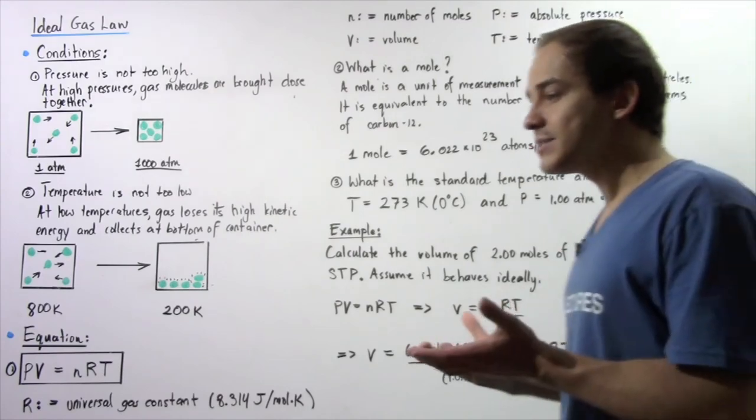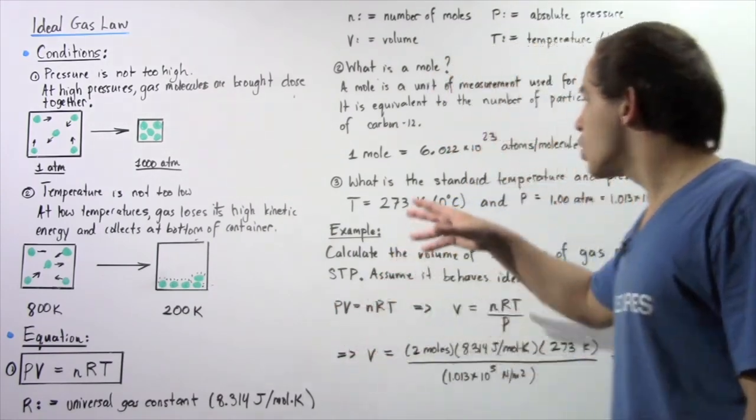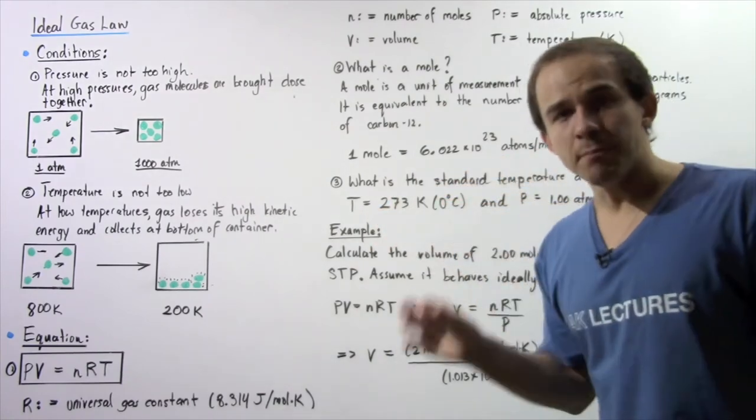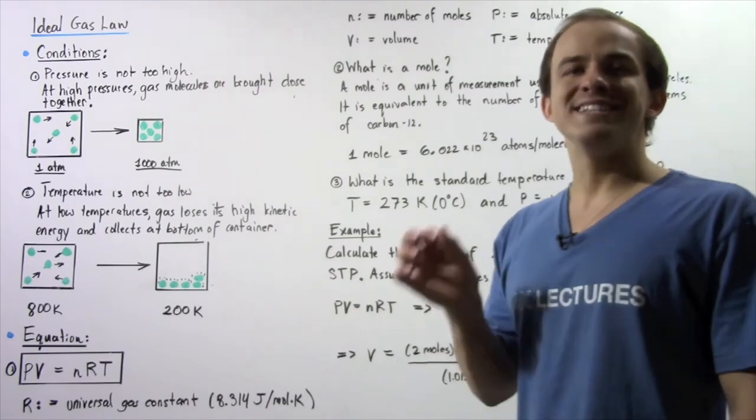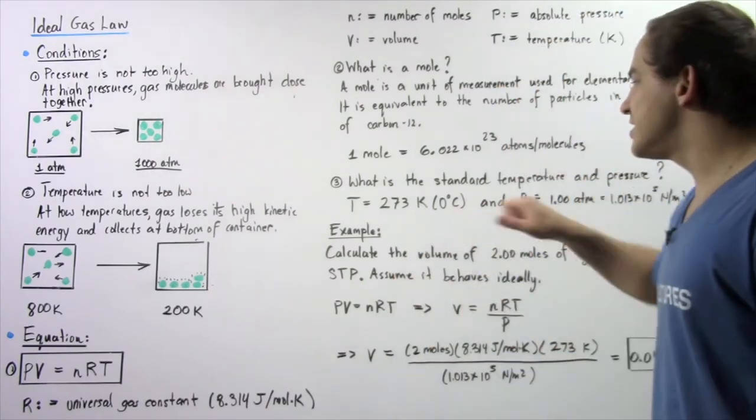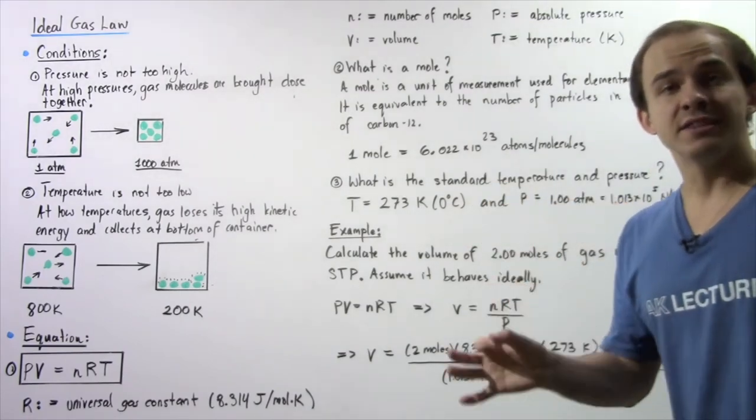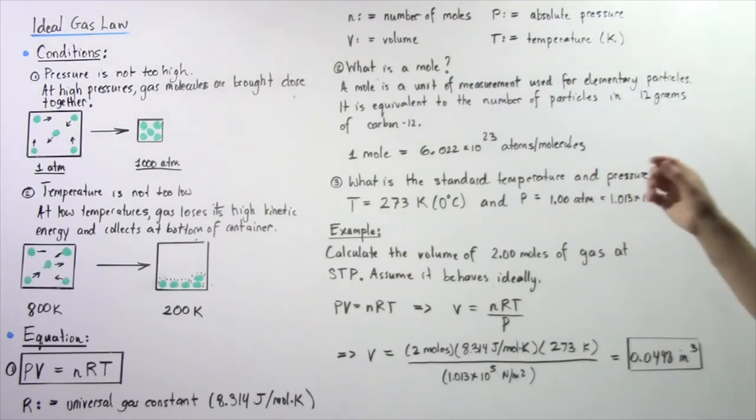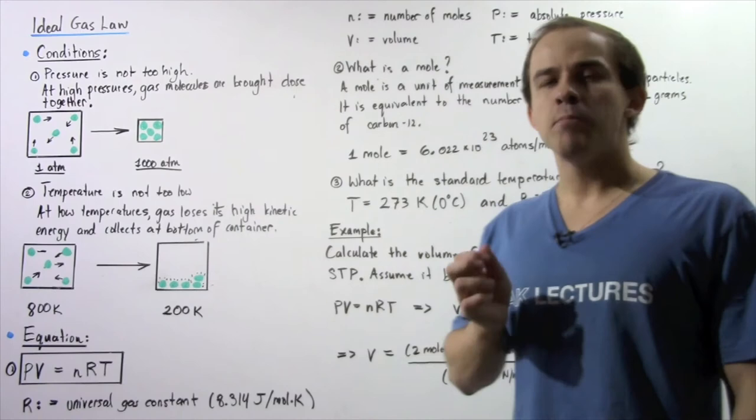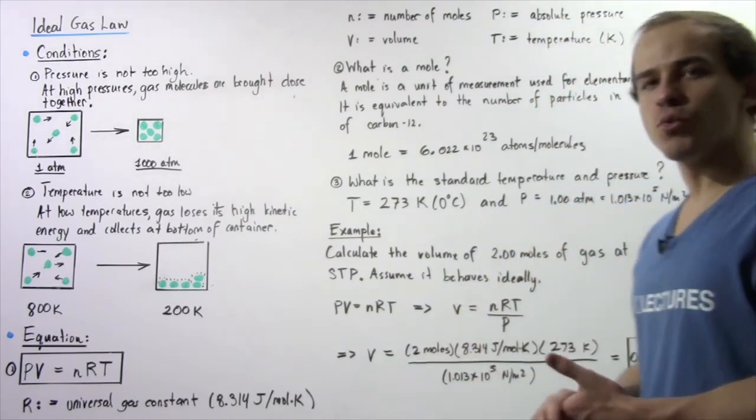Now, it is sometimes asked to define standard temperature and pressure. So what exactly is the standard temperature and pressure? Well, the standard temperature is 273 Kelvins, which is equivalent to 0 degrees Celsius. And the pressure, the standard pressure, is given to be 1 atmosphere pressure, which is equivalent to 1.013 times 10 to the 5 newtons per meter squared.